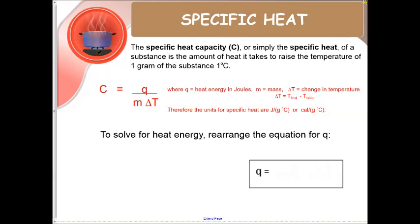Now specific heat capacity or simply specific heat of a substance is the amount of heat it takes to raise the temperature of one gram of that substance by one degree Celsius. Our formula is provided here, Q is the heat energy in joules,